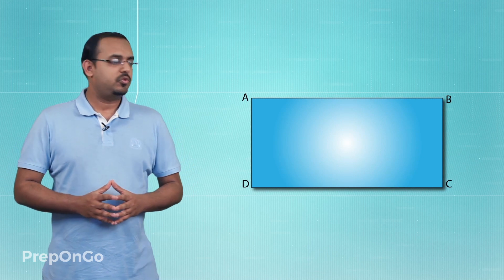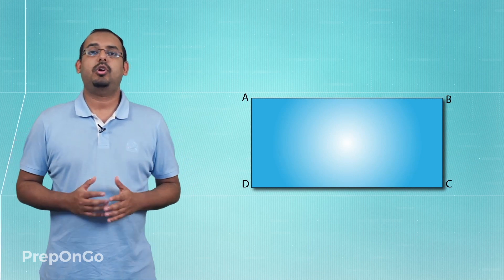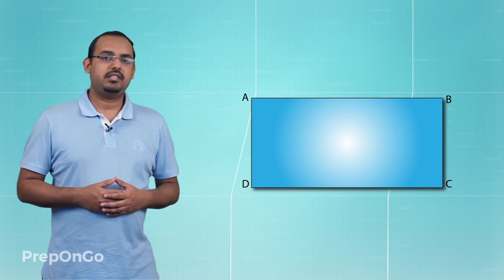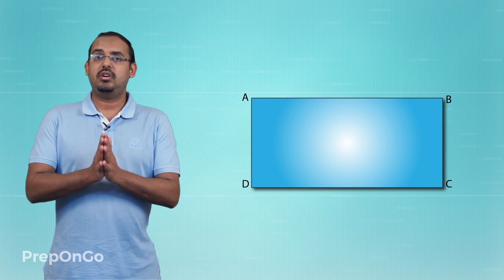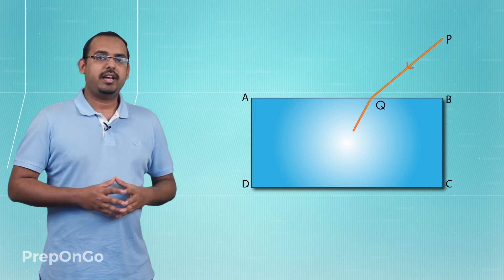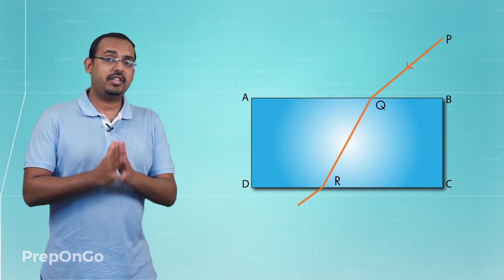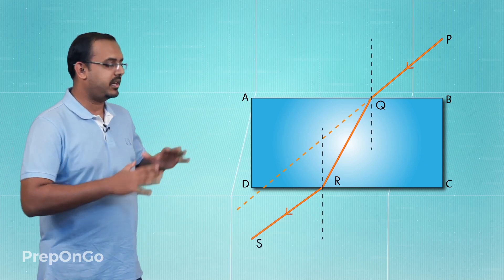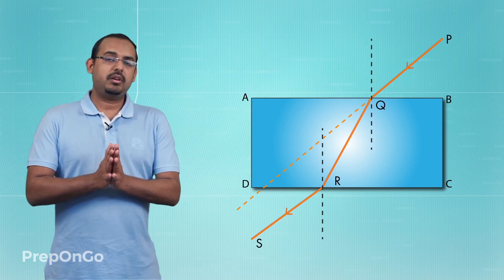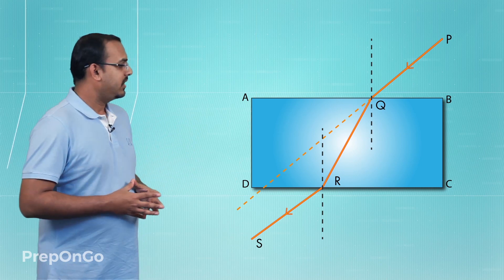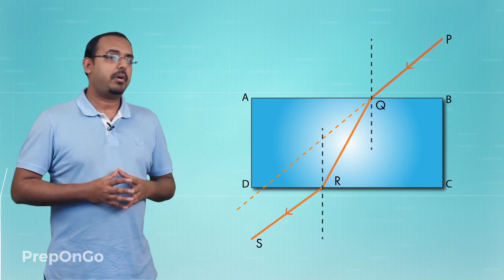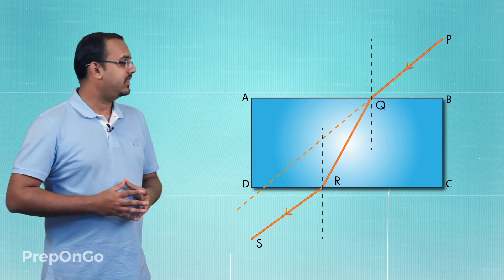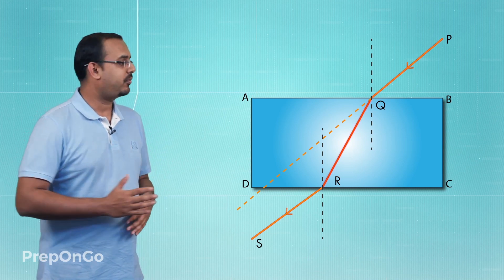We'll pass some light through one of these rectangular faces of this glass slab and observe what happens. We have passed some light through one of the rectangular faces. If you observe this phenomenon from this particular angle, it becomes a little more apparent. We can see that light which was traveling in a straight line path before it entered the rectangular glass slab, though it continues to travel in a straight line path, it deviates from its original path.